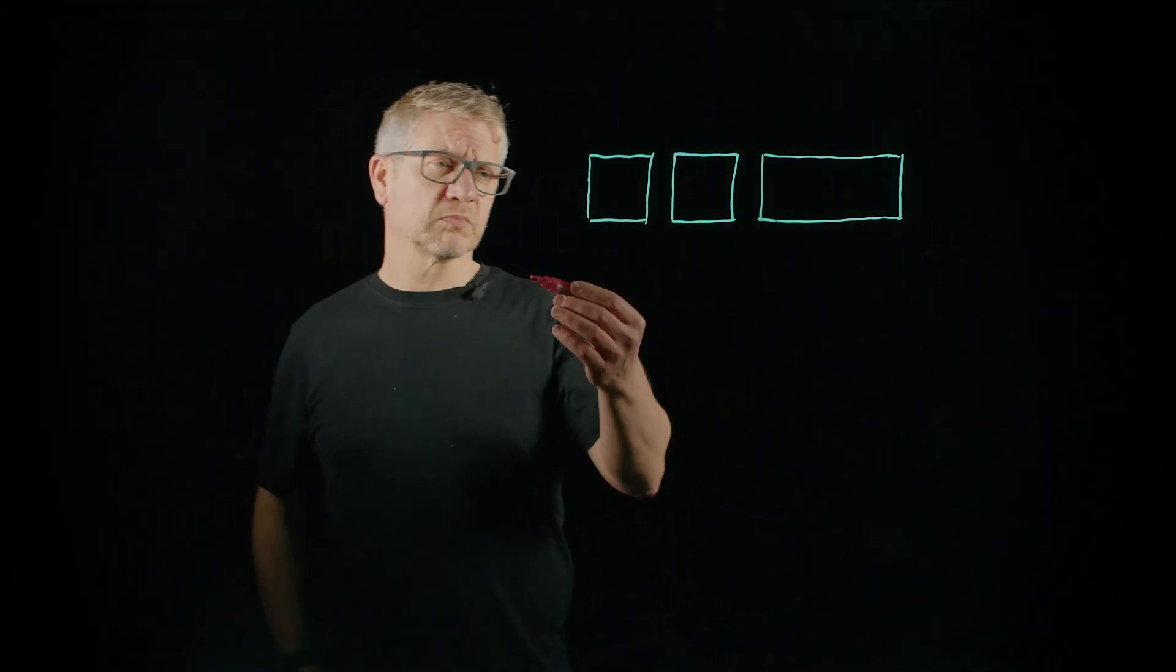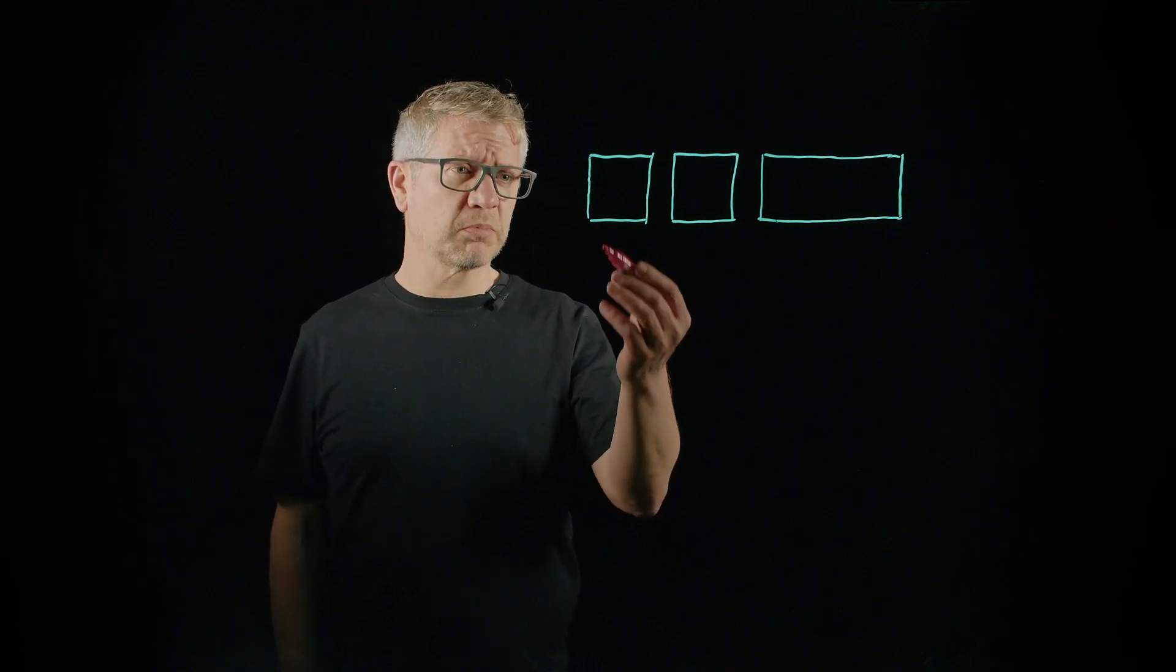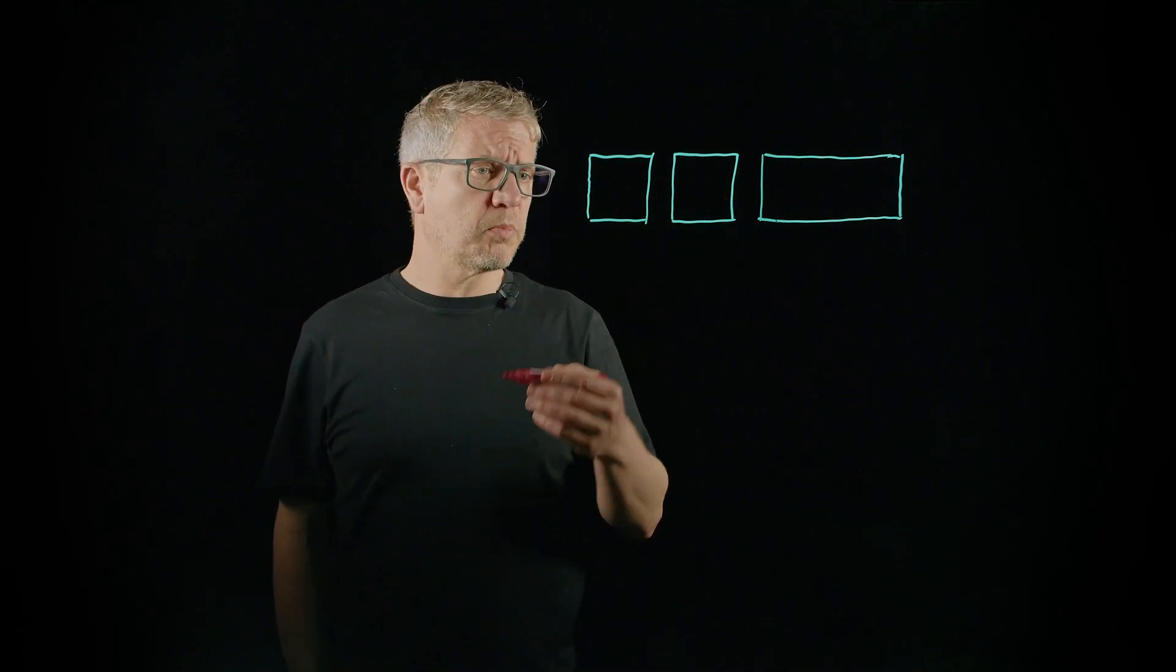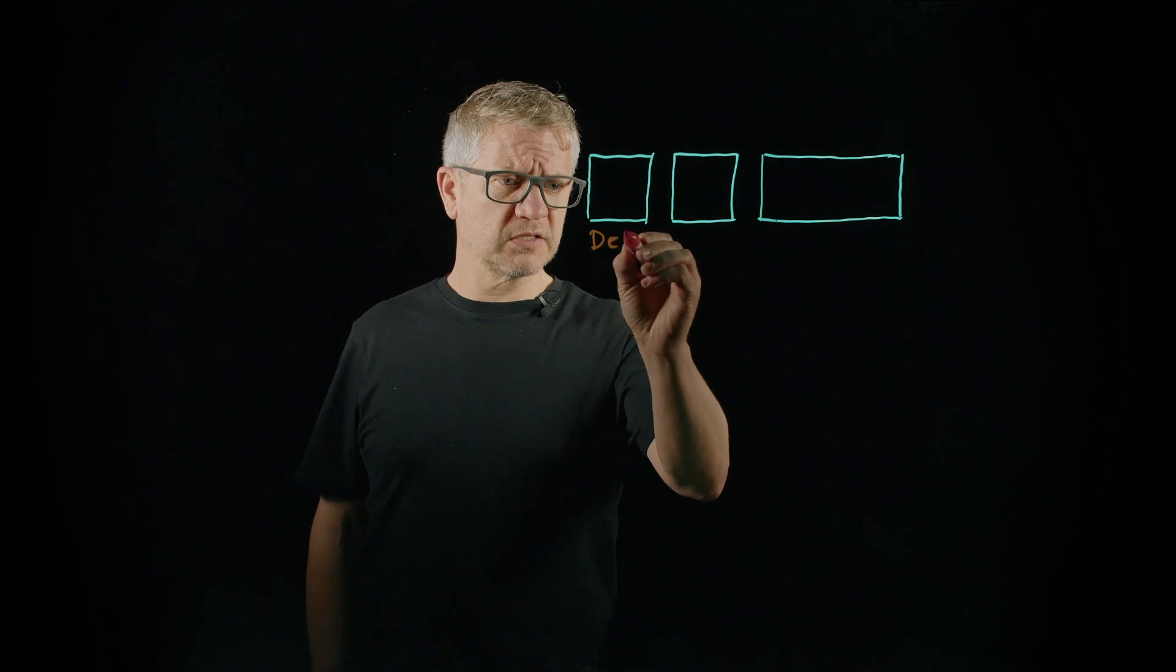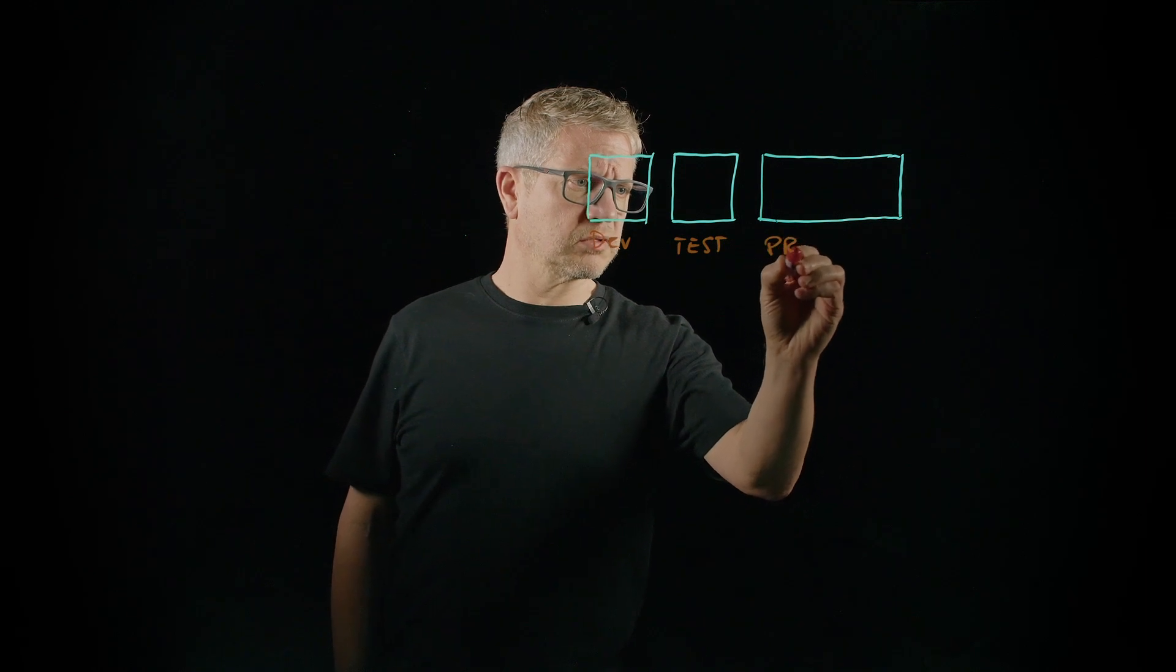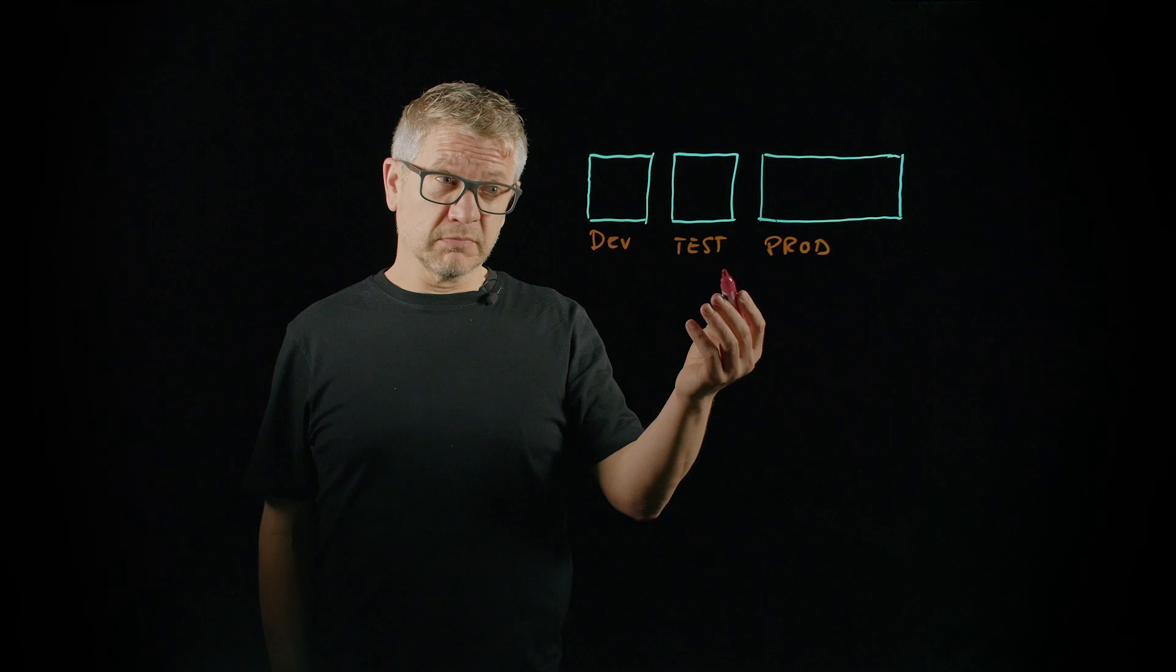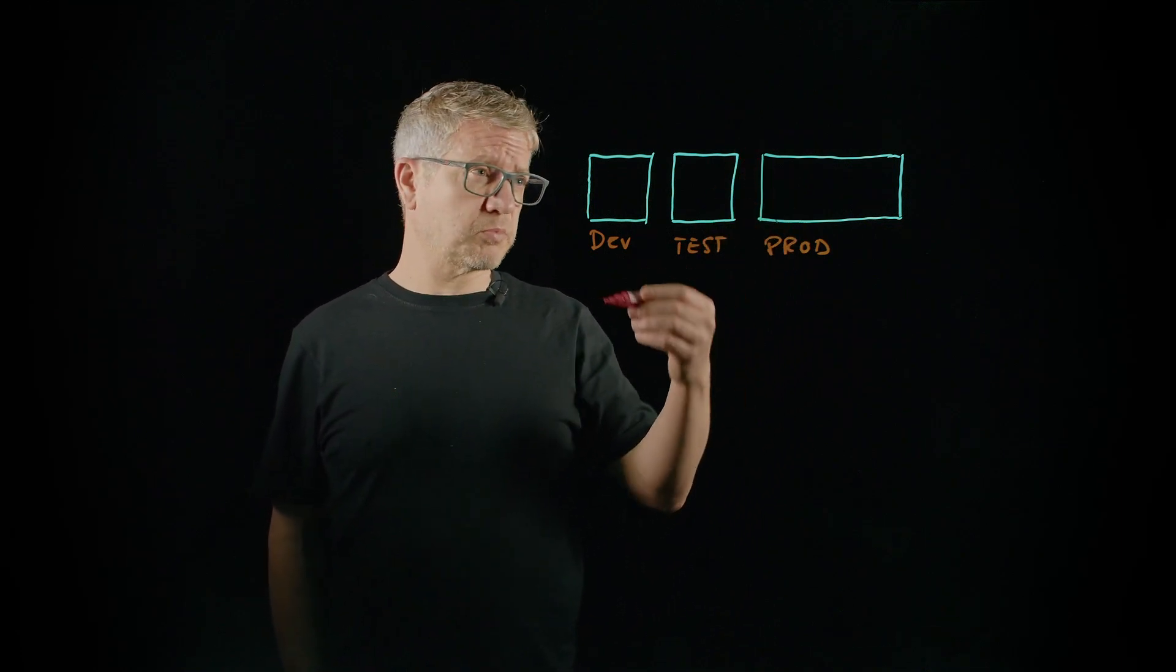So you would segment your clusters either by workloads type like database and frontend or by their usage type like you would have here your dev cluster and your test cluster and your production cluster. If you deploy an Arrow cluster, you're already deploying multiple machines, multiple nodes.